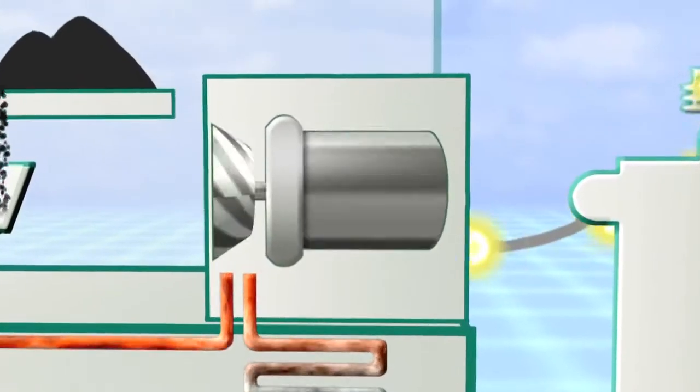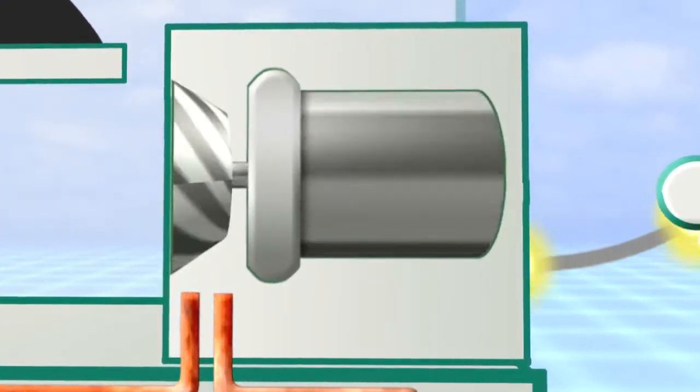The second part of the system is a steam turbine generator, which converts the heat energy captured by the steam into electrical energy.